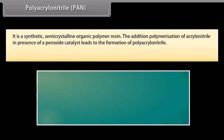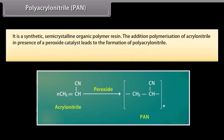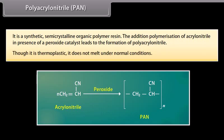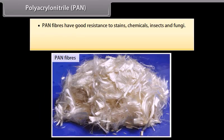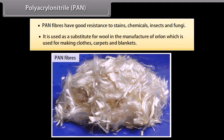Polyacrylonitrile is a synthetic, semi-crystalline organic polymer resin. Addition polymerization of acrylonitrile in presence of a peroxide catalyst leads to its formation. Though it is a thermoplastic, it does not melt under normal conditions. PAN fibers have good resistance to stains, chemicals, insects and fungi. It is used as a substitute for wool in the manufacture of Orlon, which is used for making clothes, carpets and blankets.